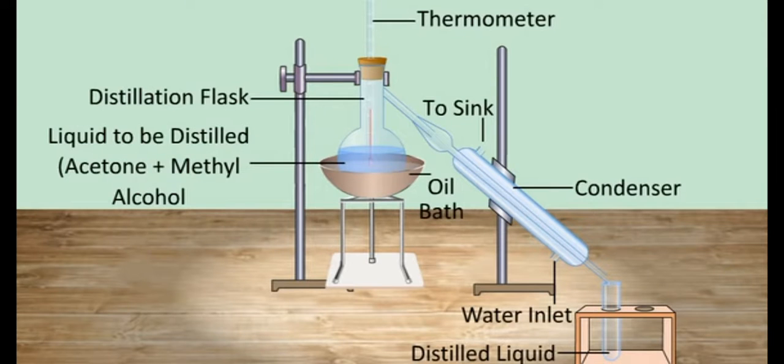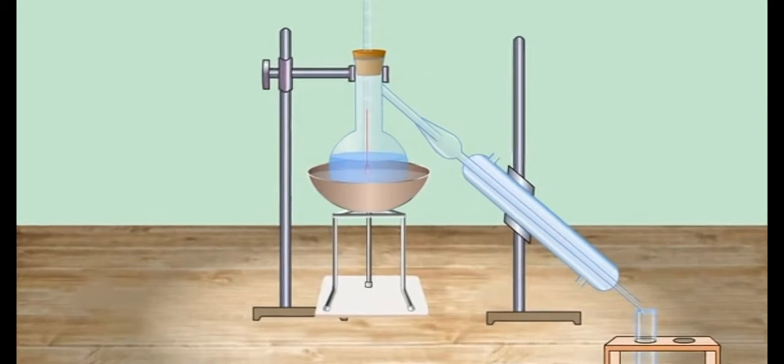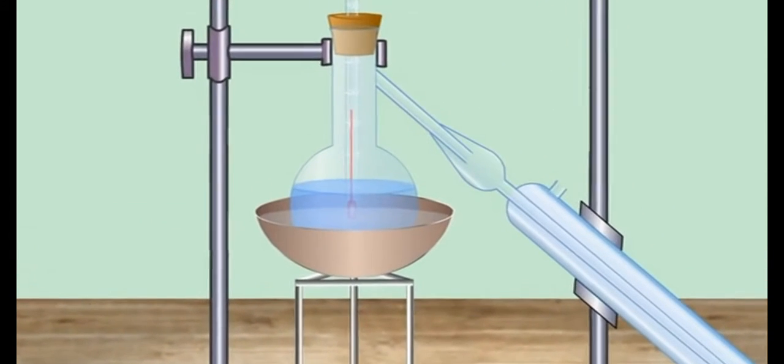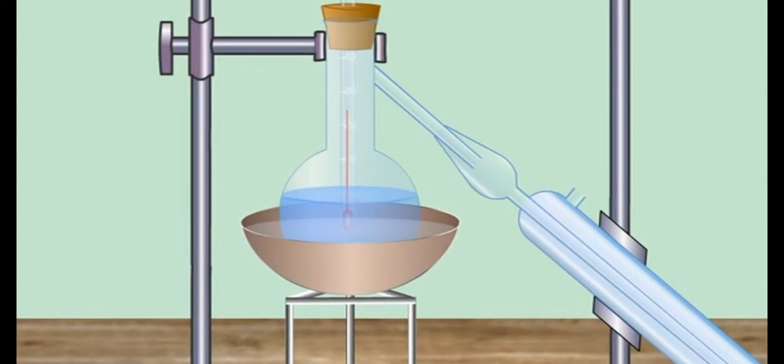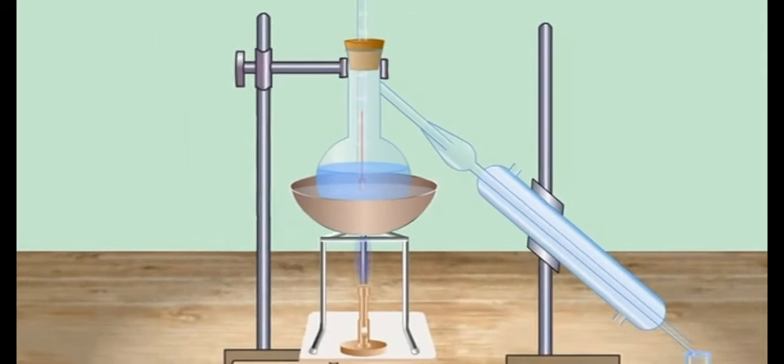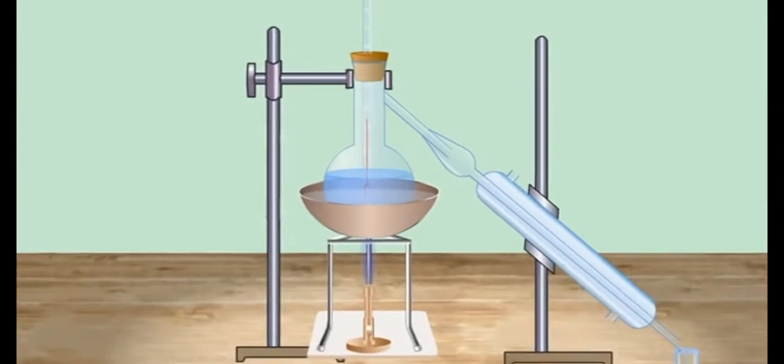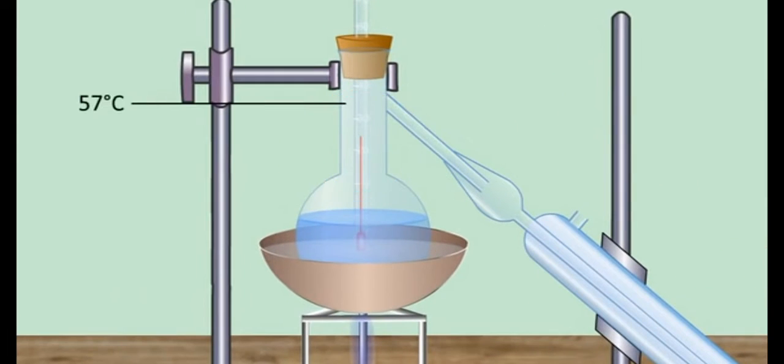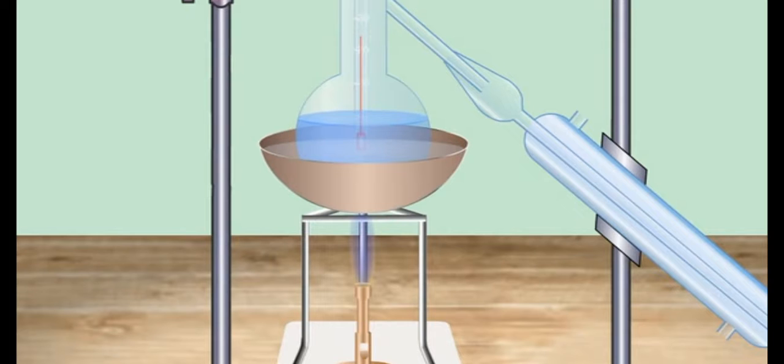Apparatus used for this purpose is shown on the frame. In this process, the mixture of liquids is taken in a round bottom flask in an oil bath and heated. As the temperature rises near the boiling point of the more volatile liquid, it starts vaporizing.